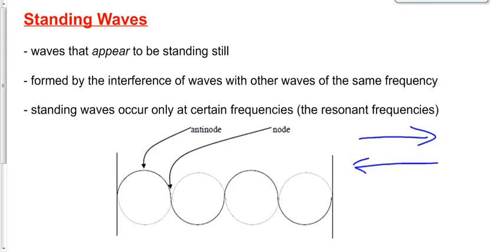If we have a wave at most frequencies, we're going to get what appears to be a random interference pattern. It's not random — it's predictable, but it appears to be random. But if we send the wave down at a very special, unique frequency, then it's going to reflect back at the same frequency and produce an interference pattern that makes the waves appear to be standing still. They're not standing still, but they look like they're standing still.